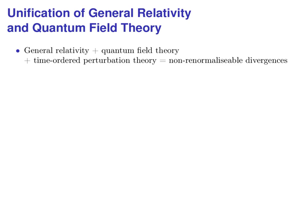When we want to combine this with general relativity, time-ordered perturbation theory does no longer work. When we try to describe gravity using intermediate particles, the calculations yield infinity. These are the so-called non-renormalizable divergencies, which prevent us from unifying general relativity with quantum field theory.